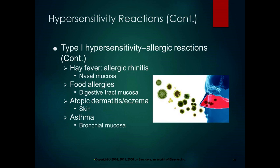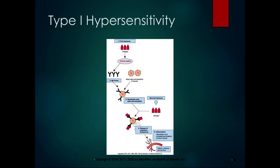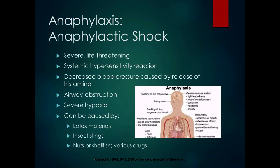Hay fever is allergic rhinitis — the nasal mucosa is affected. Food allergies affect the digestive tract mucosa. Atopic dermatitis or eczema affects the skin, and asthma affects the bronchial mucosa. Any of those things can develop into anaphylaxis or anaphylactic shock.